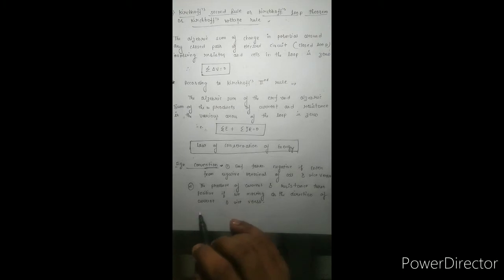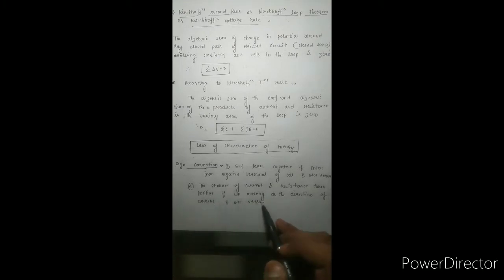The second sign convention: the product of current and resistance is taken as positive if we move in the direction of current along that arm. If we move opposite to the direction of current, then the potential drop across the resistance is taken as negative.